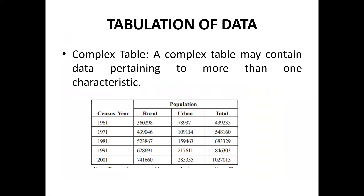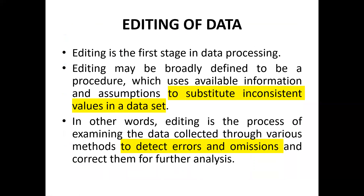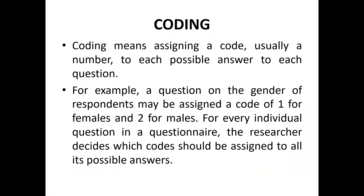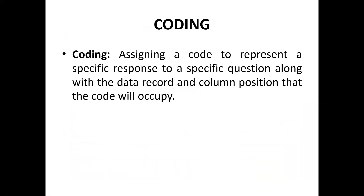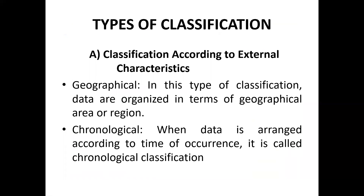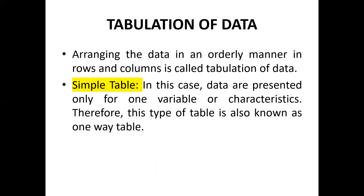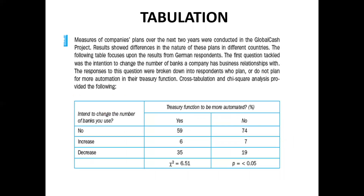These were the four steps of data processing. First, editing — removing inconsistencies. Second, coding — assigning numbers to questions, requiring a code book prepared before data collection. Third, classification — which can be on the basis of external characteristics, internal characteristics, or magnitude of the variable. Fourth, tabulation — making simple or complex tables for statistical analysis. Next session will discuss tabulation, classification, and the use of graphs. Thank you.